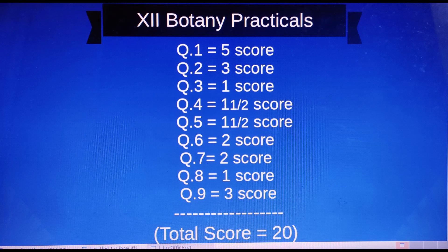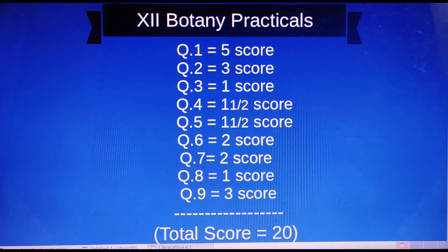Question number one: five scores. Question number two: three scores. Question number three: one score. Question number four: one and a half scores. Question number five: one and a half scores. Question number six: two scores. Question number seven: two scores. Question number eight: one score. Question number nine: three scores. Total: twenty scores.